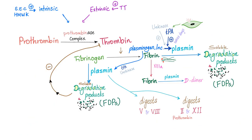Here's the whole story. The intrinsic and extrinsic pathways activate prothrombin to thrombin, fibrinogen to fibrin, and plasminogen gets incorporated into the fibrin fibers. TPA and urokinase activate plasminogen into plasmin — this takes days. Fibrin is degraded into degradation products, and the cross-linked fibrin into D-dimer.